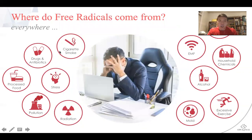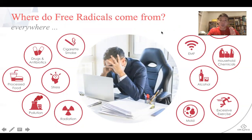The common ones include cigarette smoke, drugs, antibiotics, stress, and processed foods — and that's not just McDonald's or Burger King, but also processed meats like hot dogs, bacon, and sausages. Pollution is a big one. Radiation and wireless waves — now with 5G rolling out, there's a huge concern with the free radicals and the damaging effects that might cause on the human body. Household chemicals, alcohol, mold, and excessive exercise are also sources.